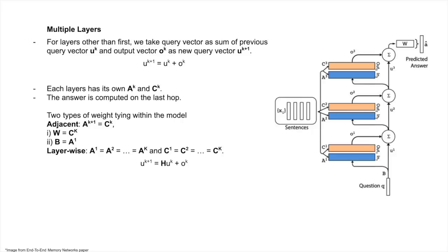It has the same concept, just the input state of the next layer would be the sum of the previous query vectors and output vectors. Each layer has its own Ak and Ck, A1 C1, and so on. We have some constraints to make it easily trainable and reduce the number of parameters.